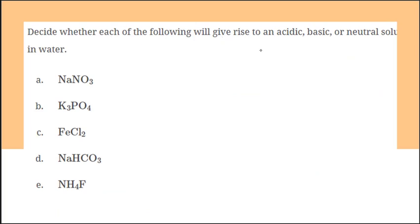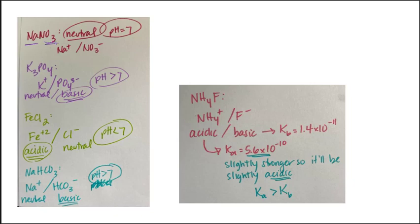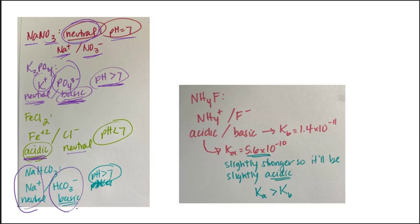Pause the video and decide whether each of the following gives an acidic, basic, or neutral solution. For NaNO3: both Na⁺ and NO3⁻ give a neutral solution, pH of 7. For K3PO4: K⁺ is neutral, but PO4³⁻ gives a basic solution, pH greater than 7. For FeCl2: iron(II) makes it acidic, chloride is neutral, so pH less than 7. For sodium bicarbonate: sodium is neutral, bicarbonate makes it basic, so pH greater than 7.